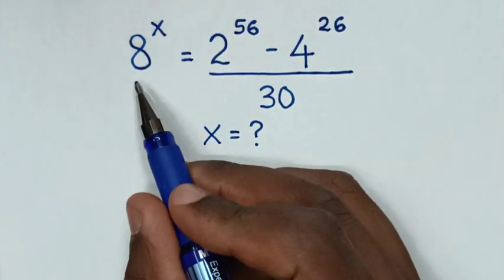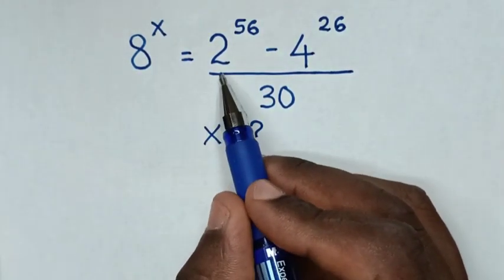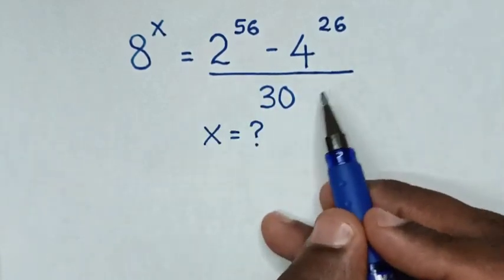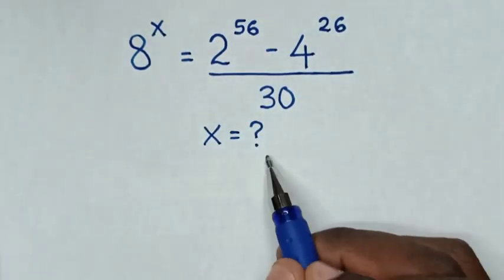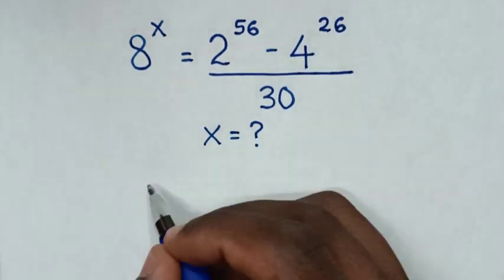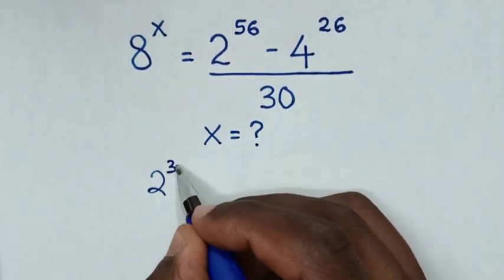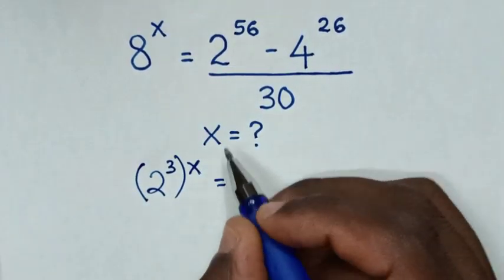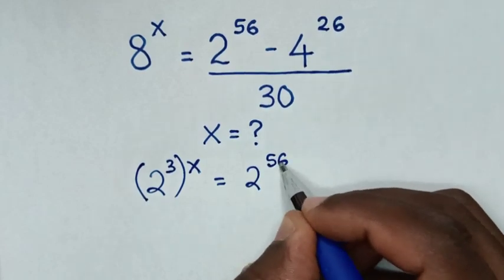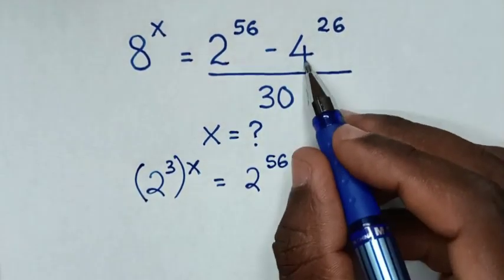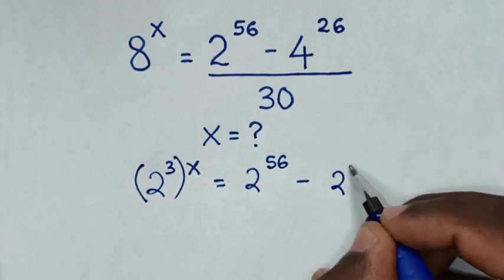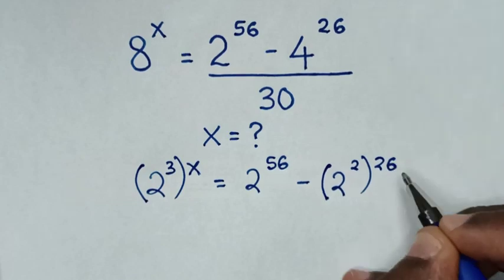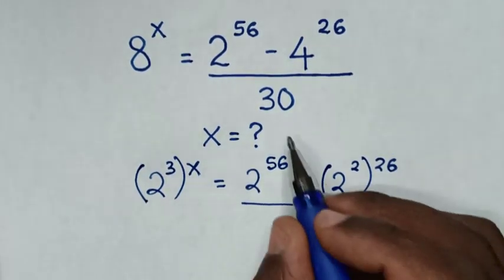Hello. Find out 8 power x is equal to 2 power 56 minus 4 power 26, over 30, to find the value of x. So, from here, 8 is the same as 2 power 3, then bracket power of x, is equal to 2 power 56, then minus 4 which is the same as 2 power 2, bracket power 26, then over 30.